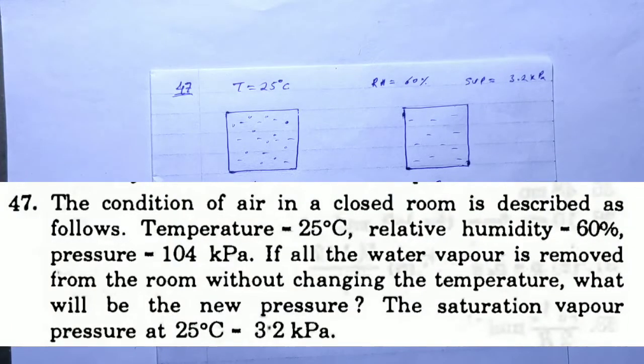HC Verma solution, Chapter 24, Kinetic Theory of Gas, Question Number 47. The condition of air in a closed room is described as follows: temperature 25°C, relative humidity 60%, pressure 104 kPa. If all the water vapor is removed from the room without changing the temperature, what will be the new pressure? The saturation vapor pressure